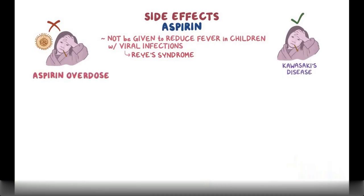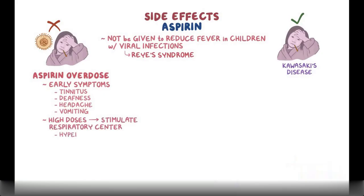An aspirin overdose can be fatal. Early symptoms of salicylate poisoning include tinnitus, deafness, headache, and vomiting, while at high doses, salicylate can directly stimulate the respiratory center and cause hyperventilation and respiratory alkalosis.